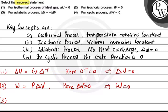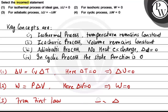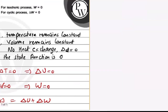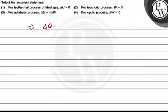Third option: for adiabatic process, delta U is equal to minus delta W. We know that for adiabatic process, delta Q is equals to zero. From the first law of thermodynamics: delta Q is equals to delta U plus delta W. Since delta Q equals zero for adiabatic process, it implies delta U is equal to minus delta W. So the third option is also correct.